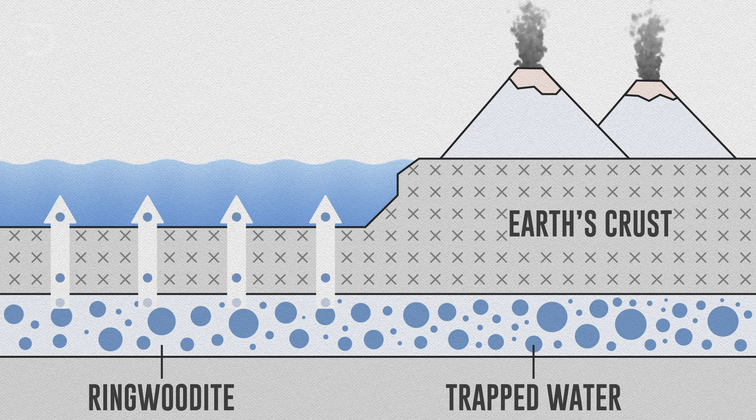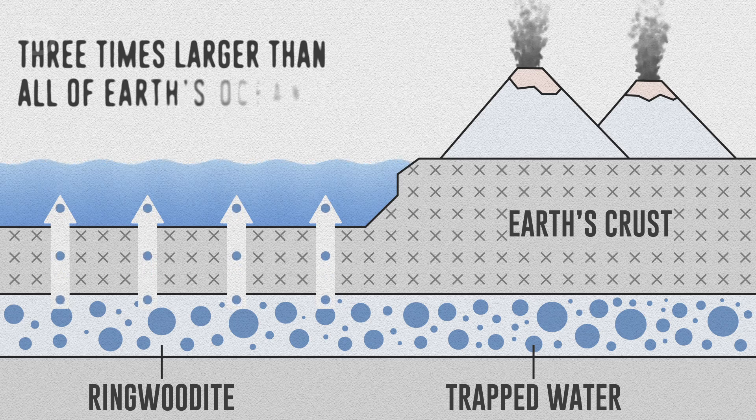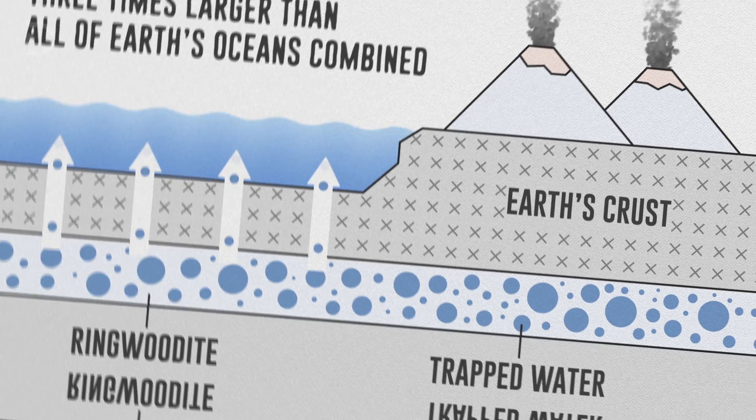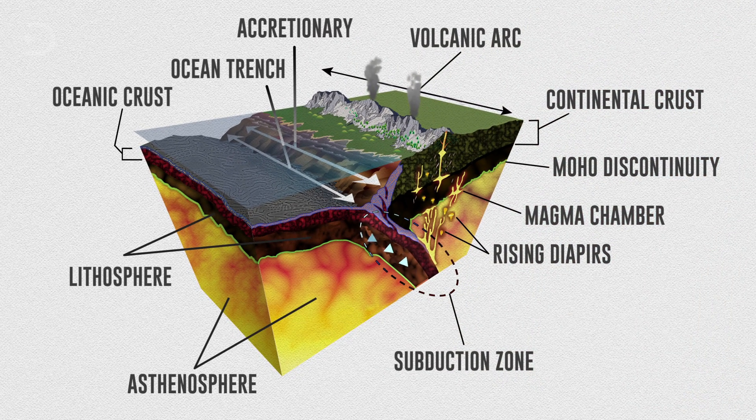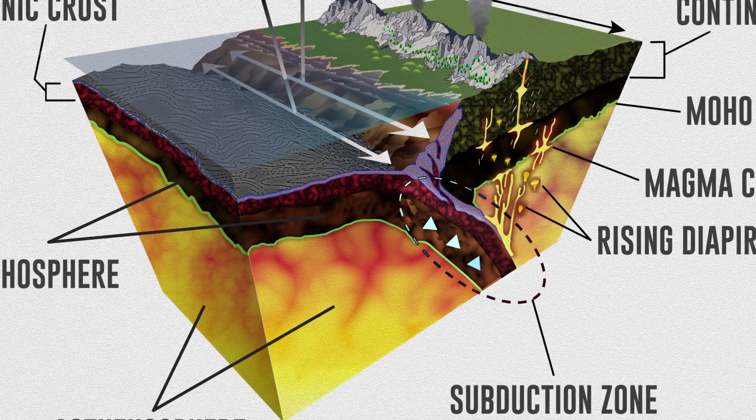Earth's mantle is so vast that if one percent of the material in the transition zone is actually water, it would represent a reservoir three times larger than all of Earth's oceans combined. Water being pulled into these subduction zones plays a big part in other things happening around the planet. When water runs down into Earth's crust along these subversion zones, or fault lines, some of it becomes trapped.